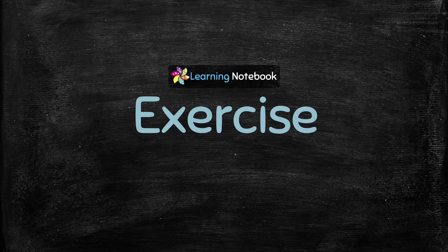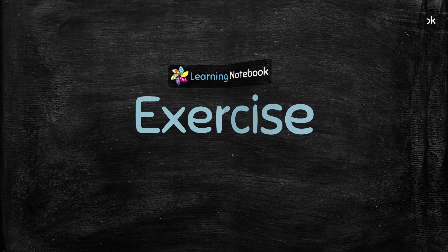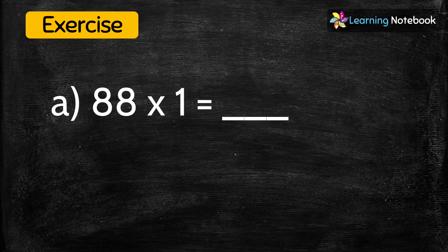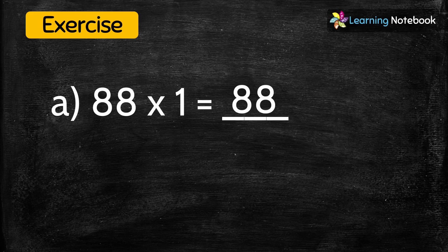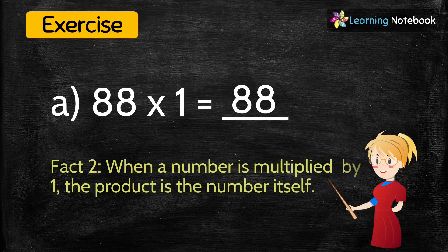Now let's do some practice. Question 1: 88 multiplied by 1 equals? The answer is 88, because we learned in multiplication fact 2 that when a number is multiplied by 1, the product is the number itself.